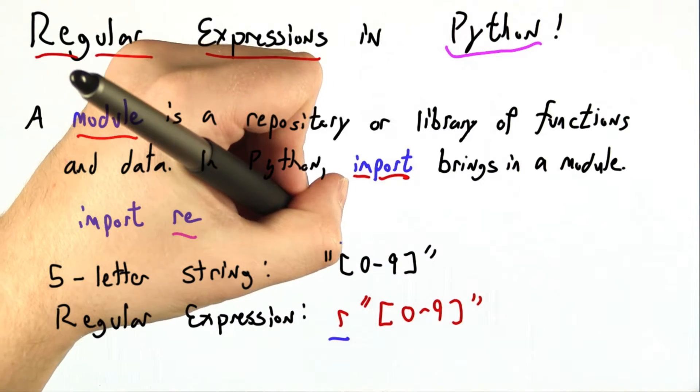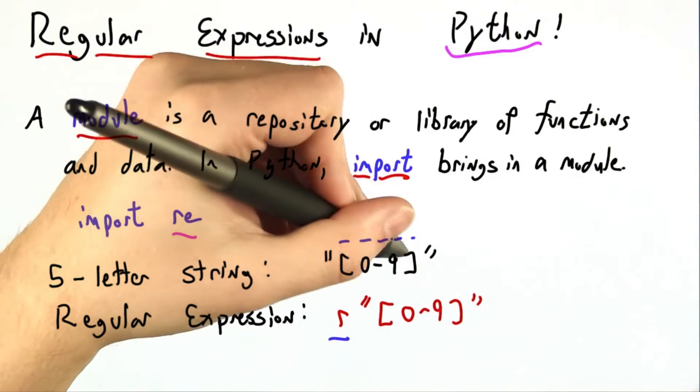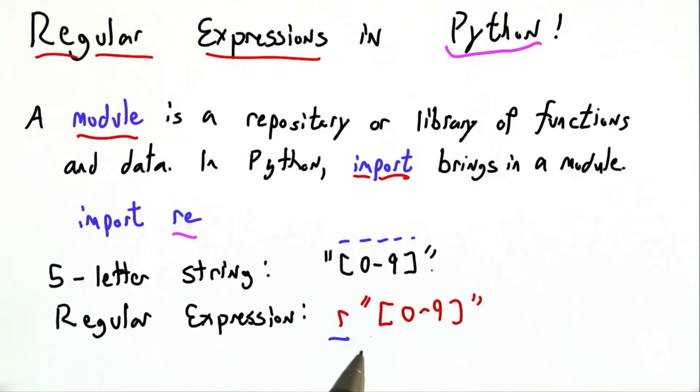So up here, this is a 0, 1, 2, 3, 4, a 5-character string 0 through 9. This one down here that begins with an r is a regular expression that matches 10 different one-letter strings.